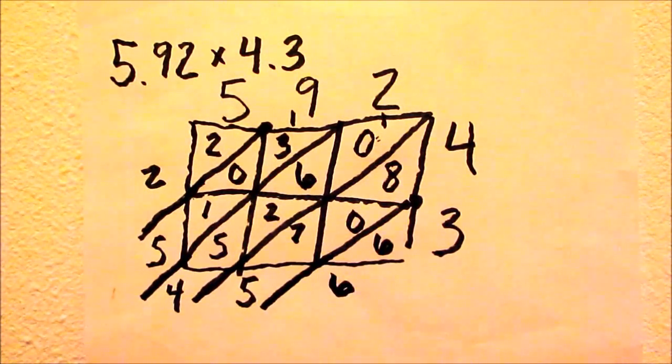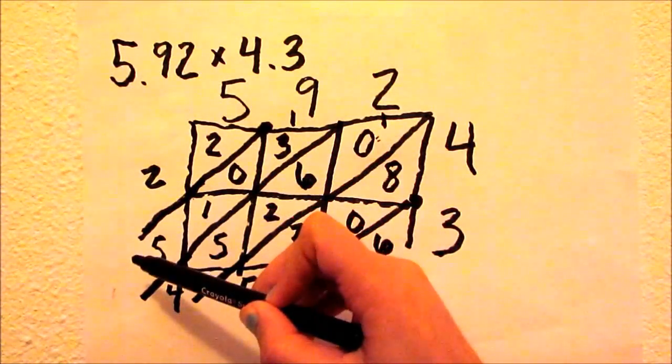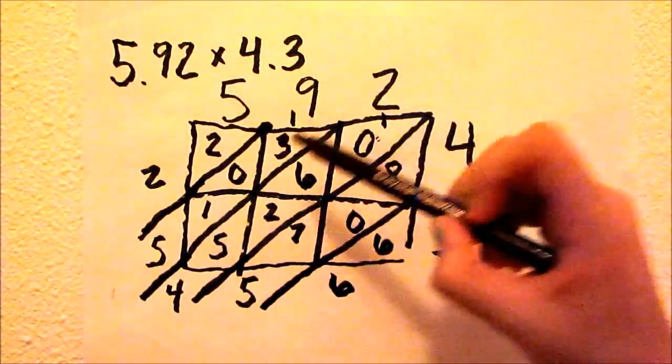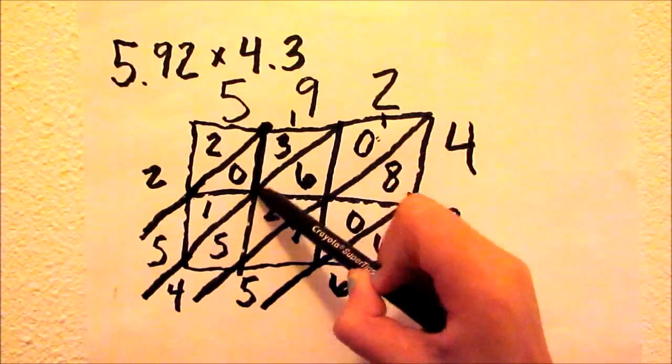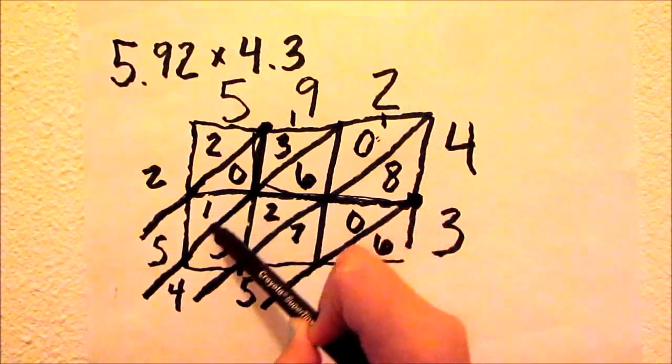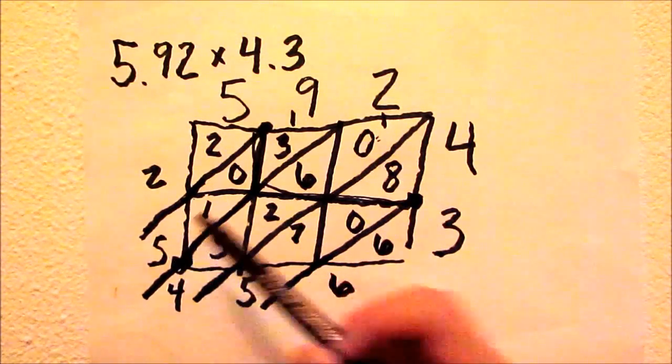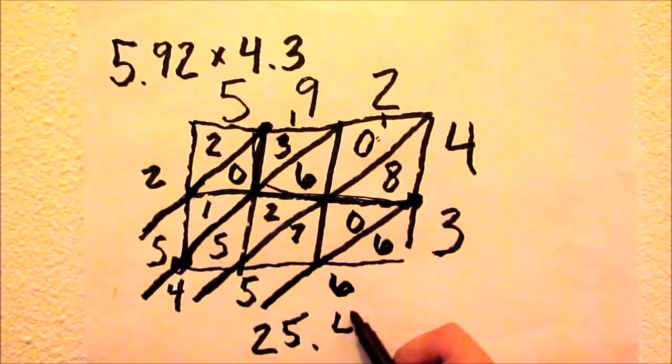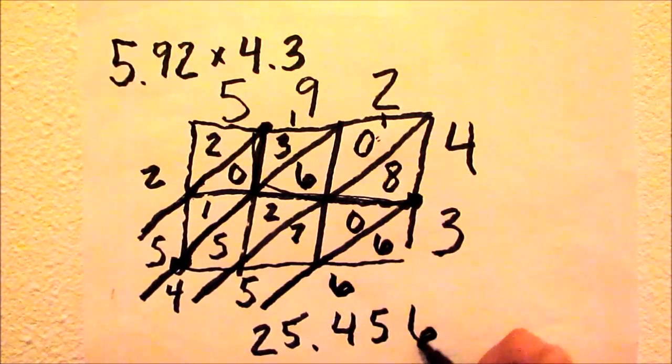We get our answer by writing down the left side and across the bottom side. In regards to our decimal, we bring down our decimal where they both meet. And our answer would be 25.456.